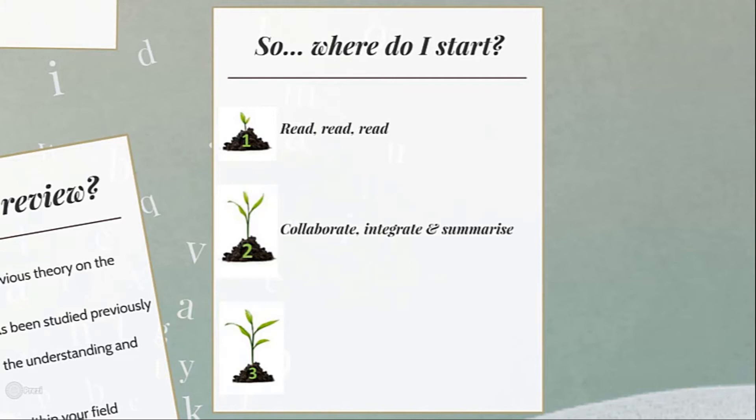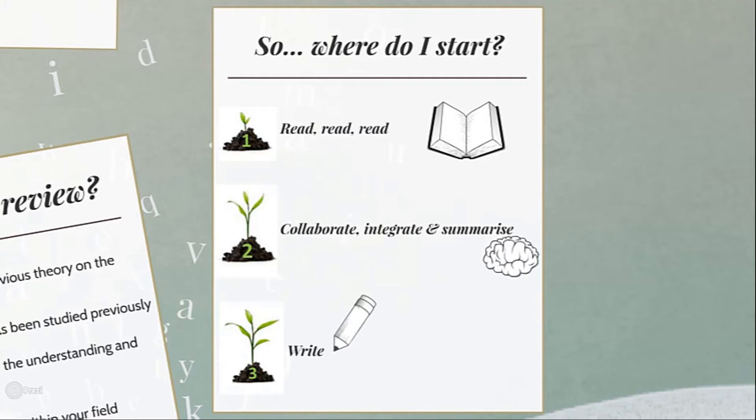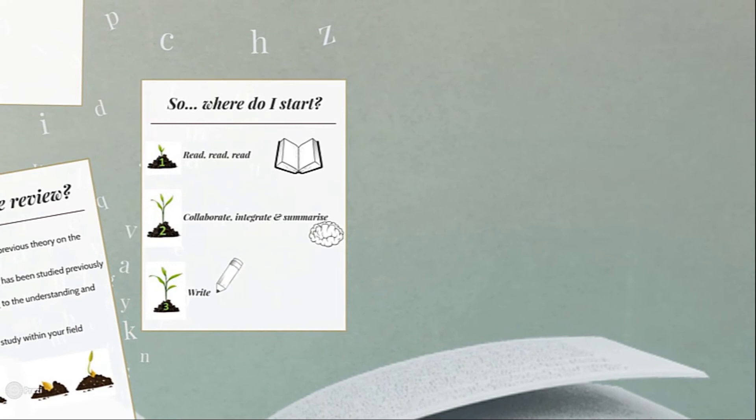Lastly, you write up your literature review. Please note that the writing part comes after the reading and the collaborating, integrating, and summarizing. Don't start writing before you've really done the first two steps. Now let's look at what the reading phase entails. Literature review reading starts off very broadly — you read everything you can find on communication satisfaction, for example — and then becomes more and more specific as you focus on the aspects applicable specifically to your study.